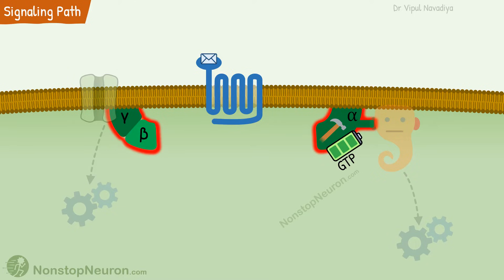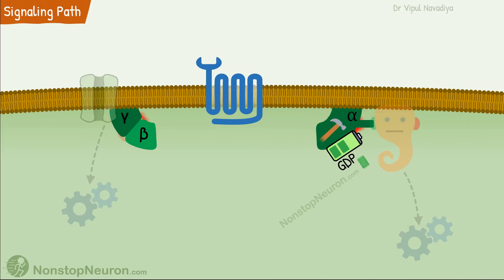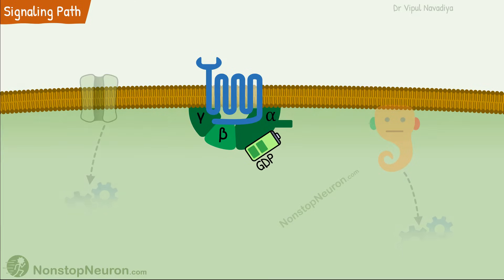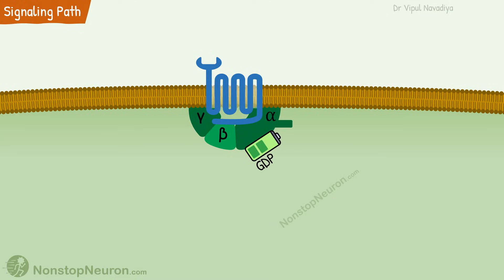The alpha subunit itself has GTPase activity, so after a while it hydrolyzes GTP into GDP and phosphate. This inactive alpha subunit dissociates from the downstream molecule and re-associates with the beta-gamma complex. This terminates the signal and brings the system back to the resting condition. This is the cycle that subunits of G-proteins follow during signaling.